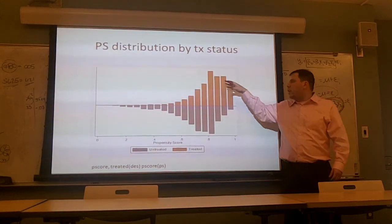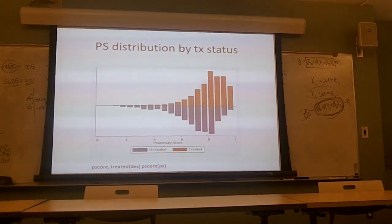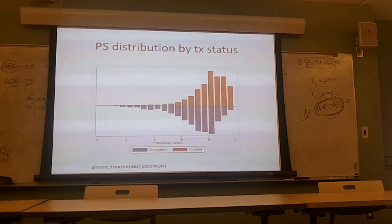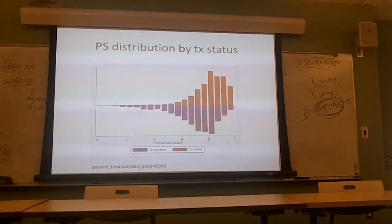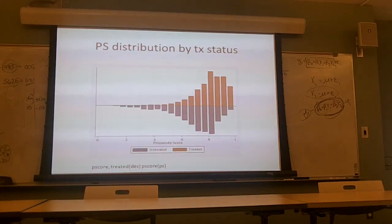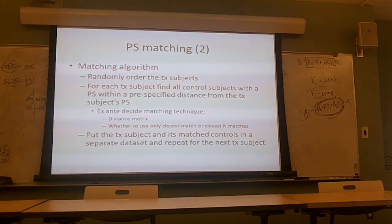This can happen, for example, when doing an analysis of minimally invasive procedure use in claims data — comparing minimally invasive prostatectomy versus open prostatectomy. Depending on the year, there might not be many cases who got the treatment, or the condition might be relatively rare. Over ten years we might only have 100 minimally invasive cases and 10,000 open prostatectomies. We want to make sure those 100 treatments are matched with the closest possible cases among the 10,000 who didn't get the treatment.